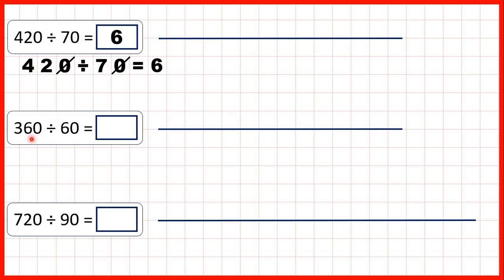Now we have 360 divided by 60. Again with division questions we can cancel our end zeros. So 360 divided by 60 will give the same answer as 36 divided by 6 which is 6.